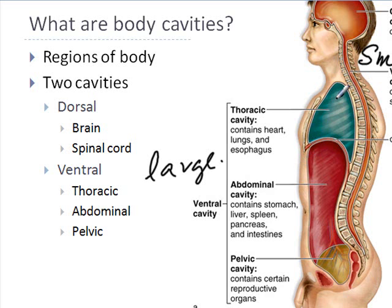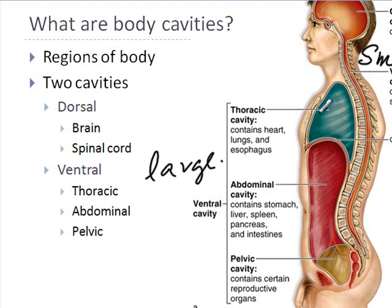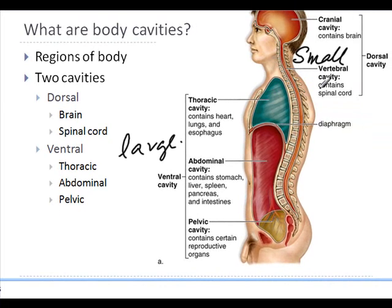The ventral cavity will contain the diaphragm too, because it includes the heart, lungs, and esophagus, and the abdominal cavity, and the pelvic cavity. It is divided by the diaphragm, but it is all a part of the ventral cavity. The dorsal cavity is the smaller of the two, and it mainly contains the brain and the spinal cord.